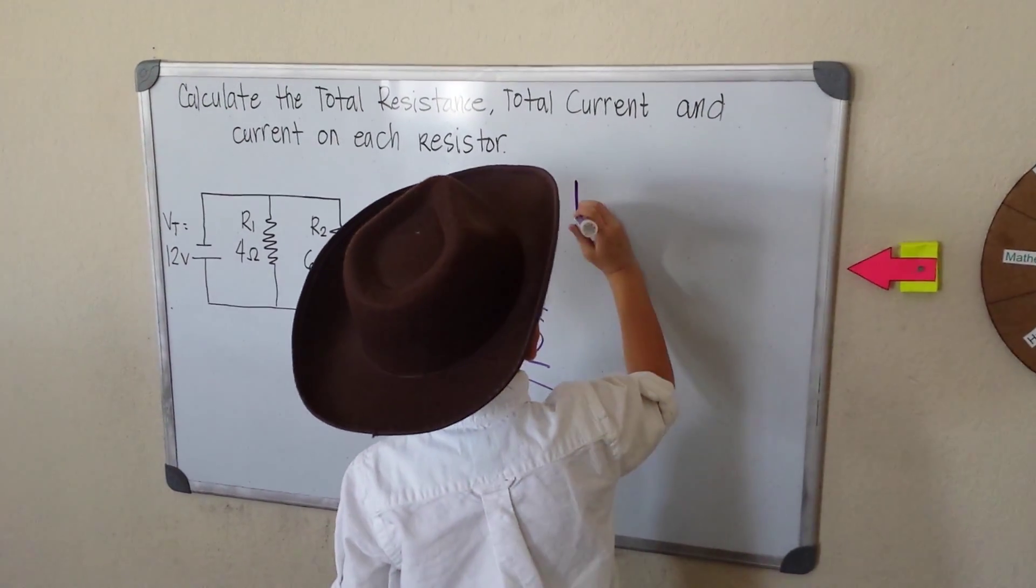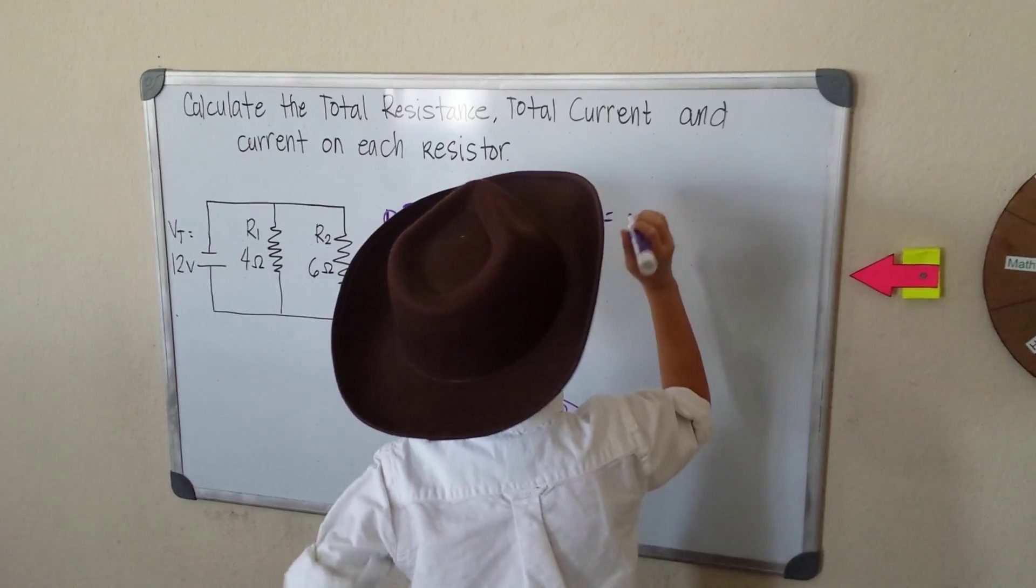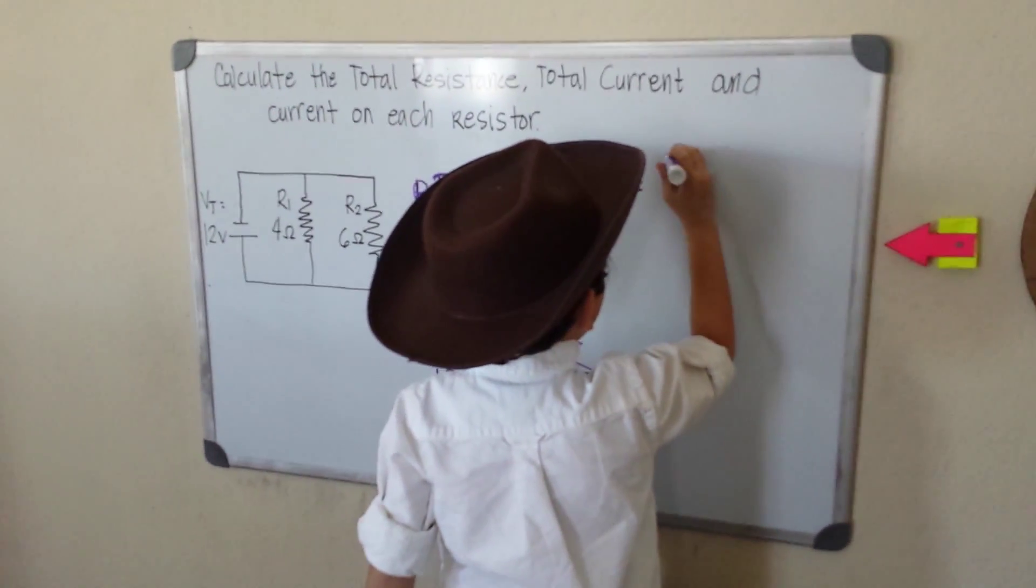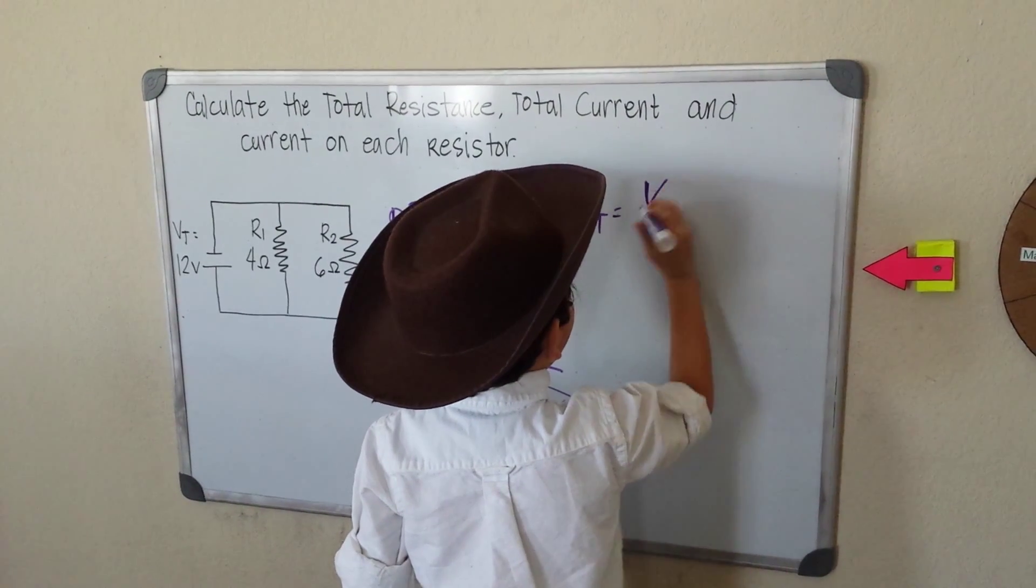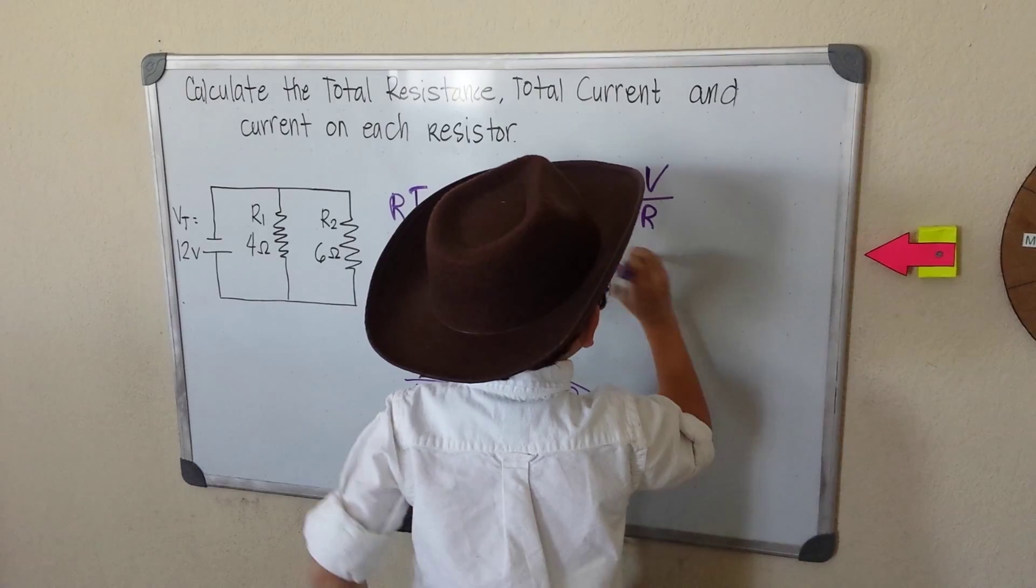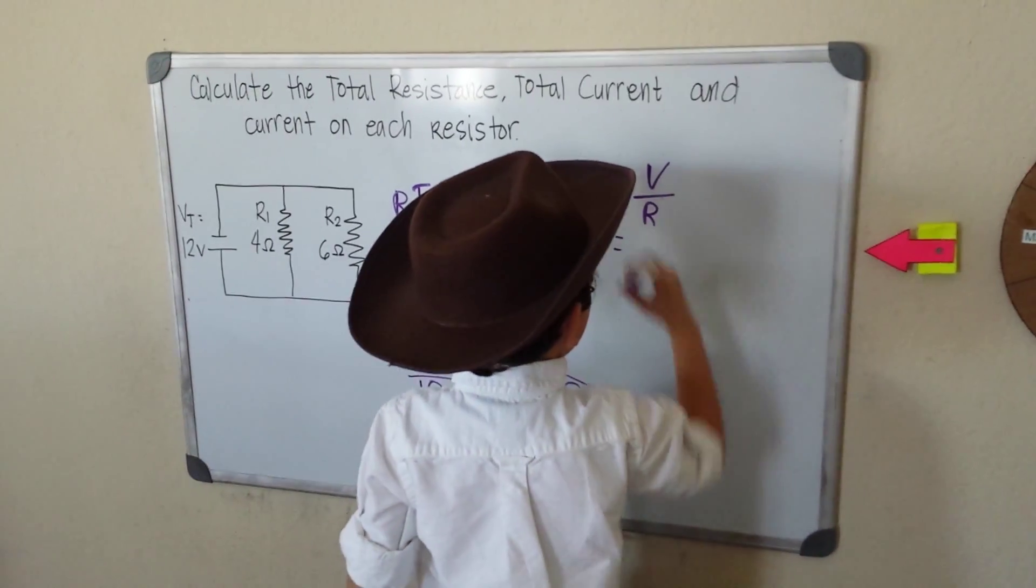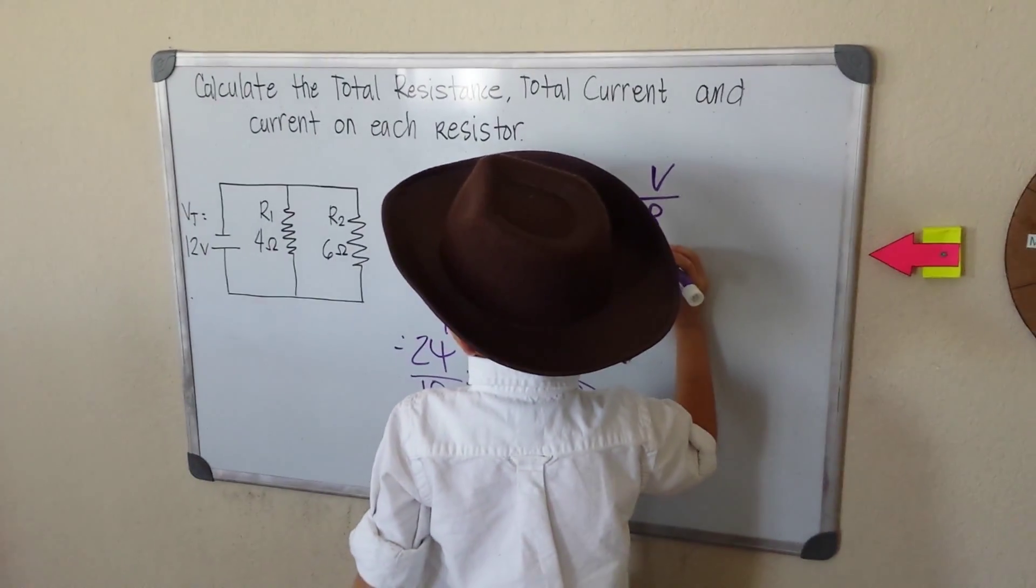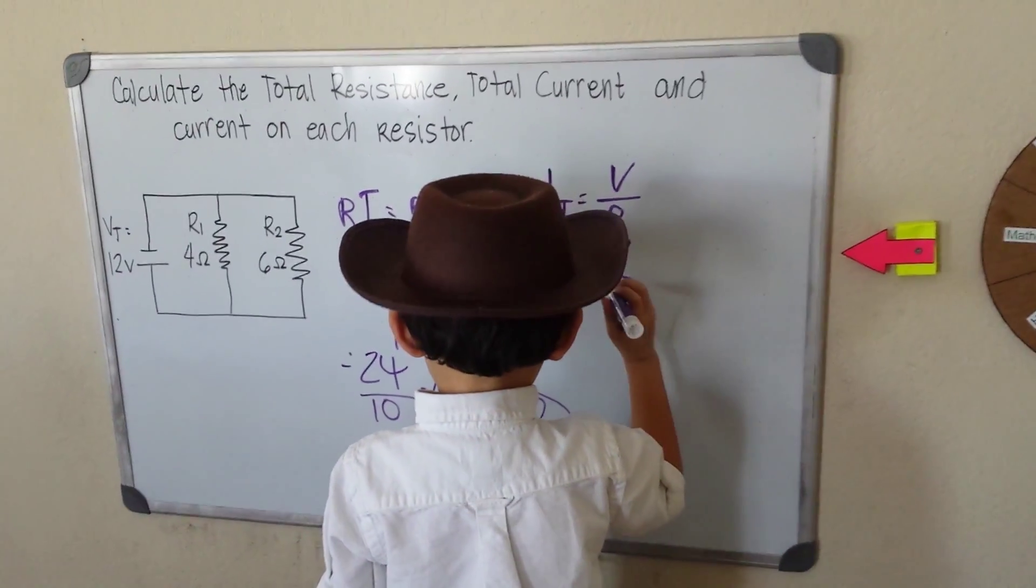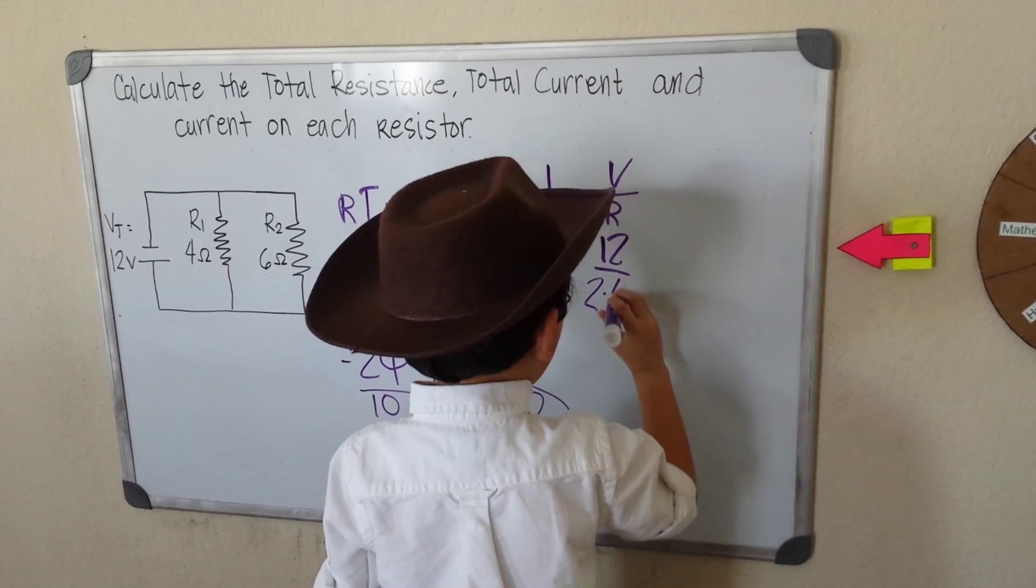Now our total current equals, let me think, that would be V over R. What's our voltage? 12 divided by 2.4.